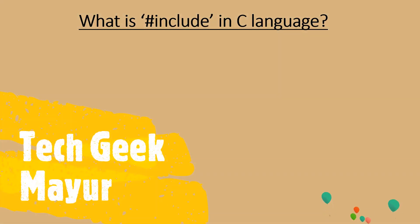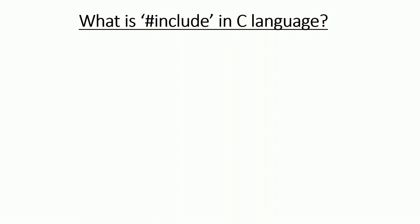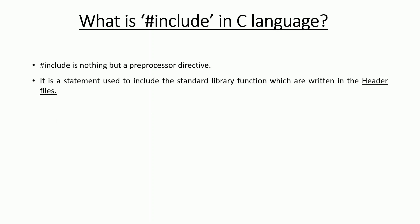Hello guys, welcome to channel TechDeek Mayur, my name is Mayur, and today we will learn what is hash include in C language. So let's get started. Hash include is nothing but a preprocessor directive — it is a statement used to include the standard library functions which are written in the header files.